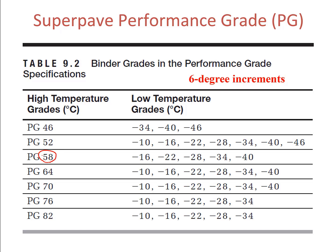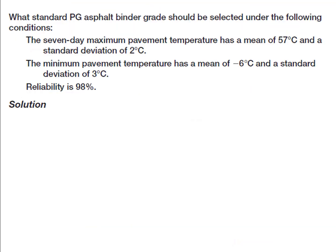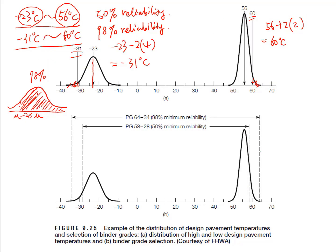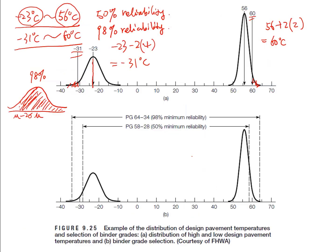When choosing the design maximum, the value should be closest to 56 but higher than 56 — so that is 58. When choosing the design minimum, it should be closest to negative 23 but lower than negative 23 — so that is negative 28. Therefore, the binder for 50 percent minimum reliability should be PG 58 to negative 28.